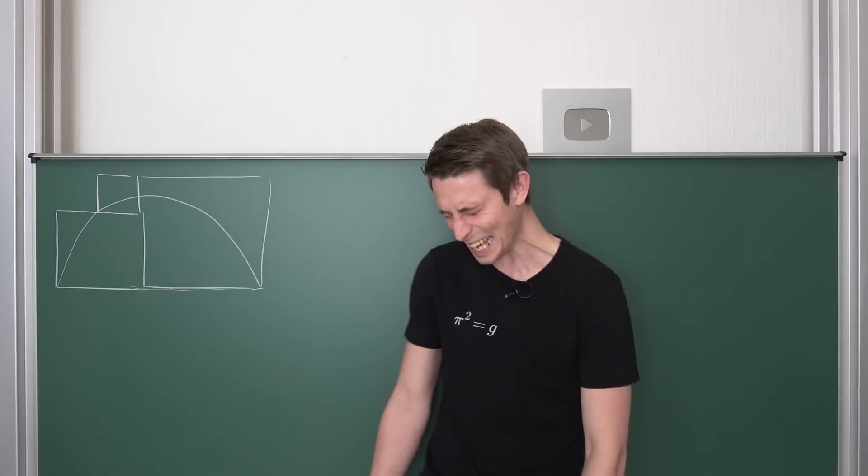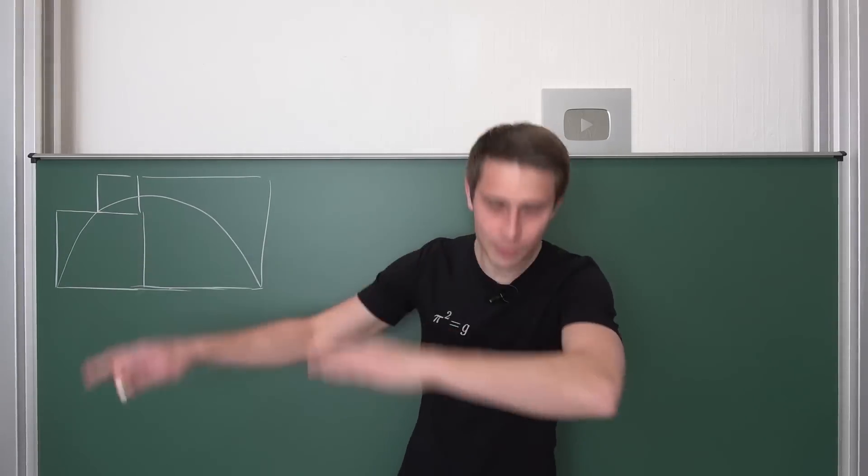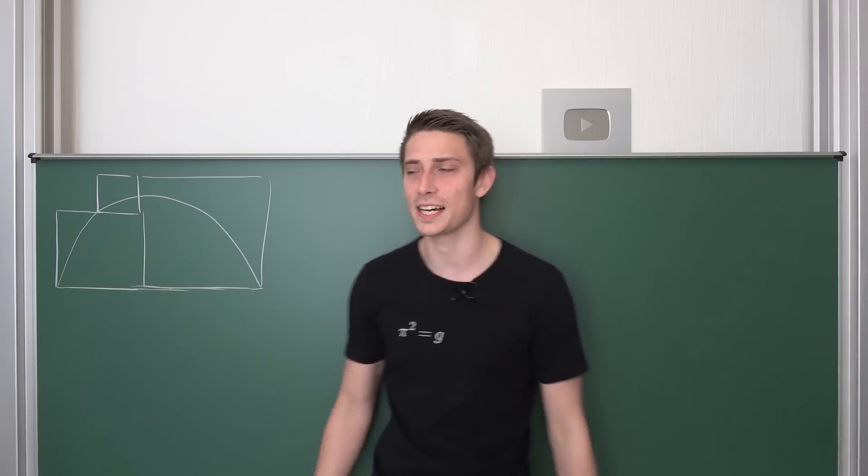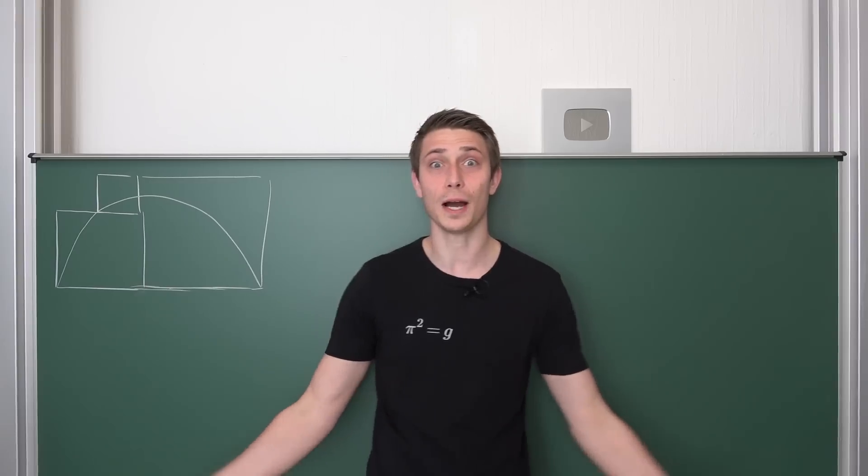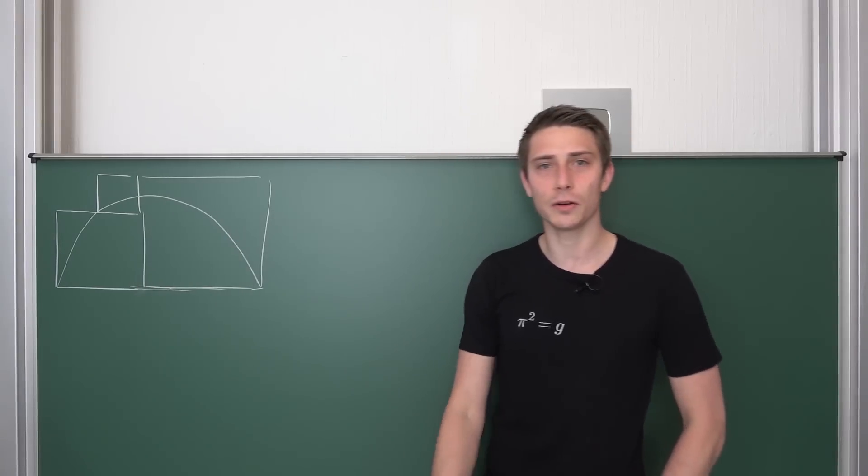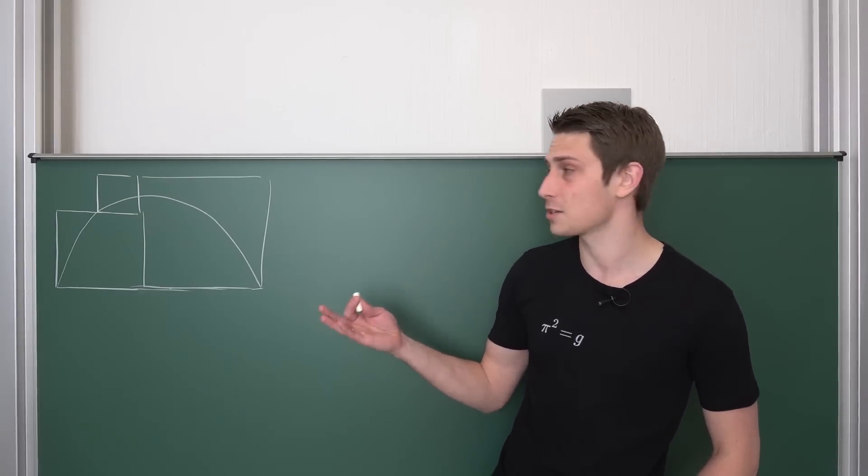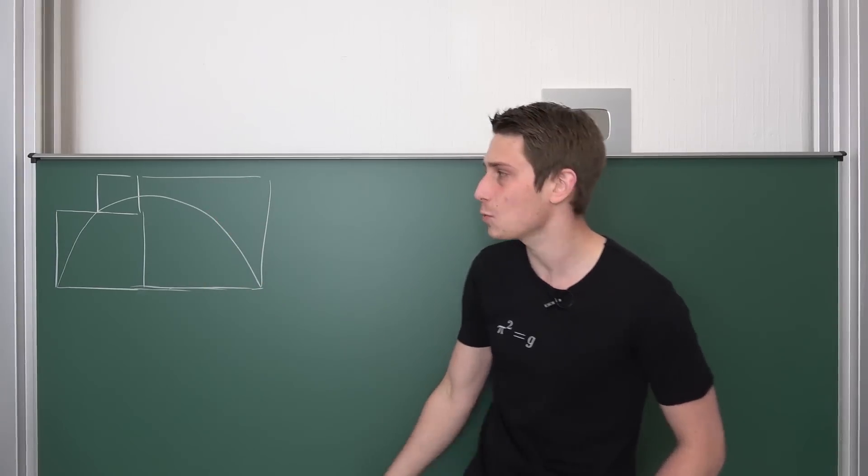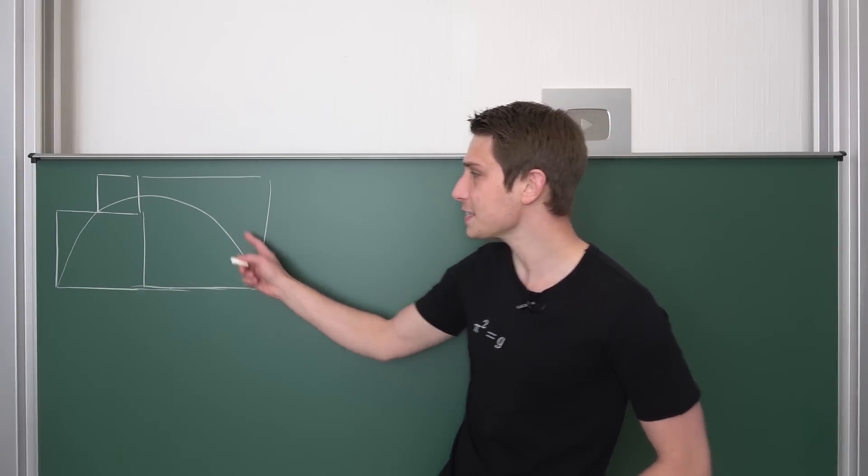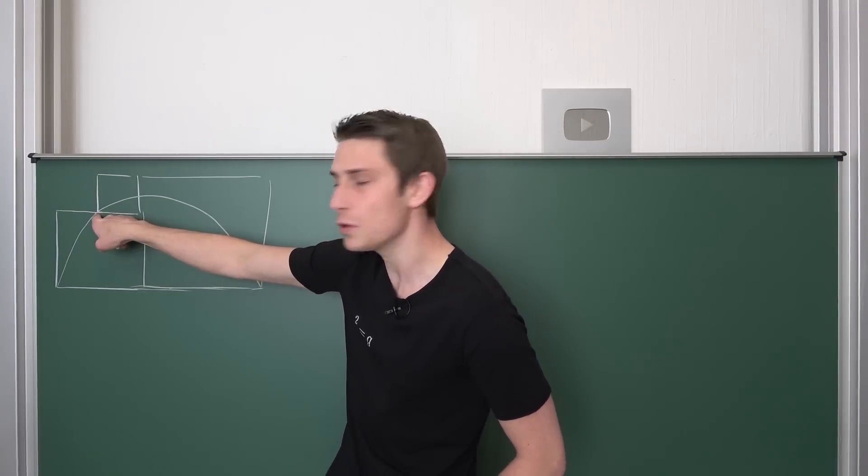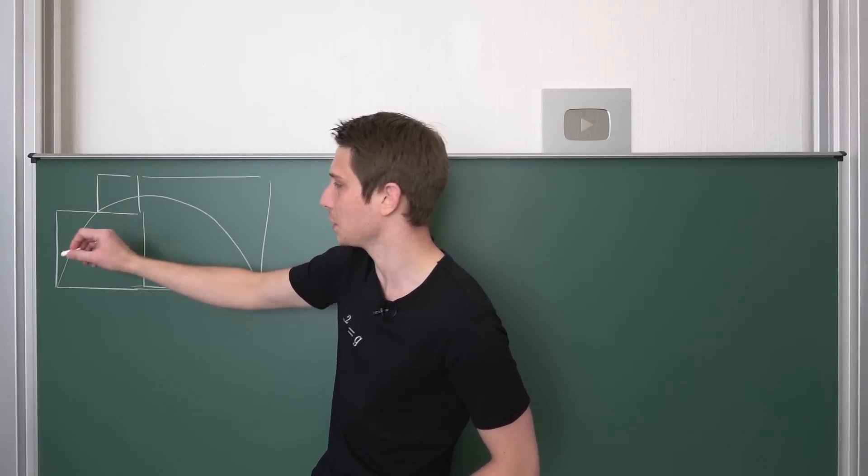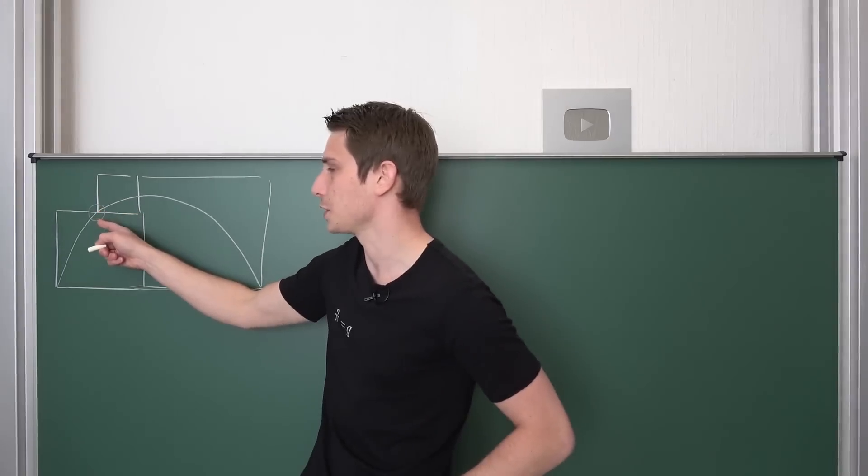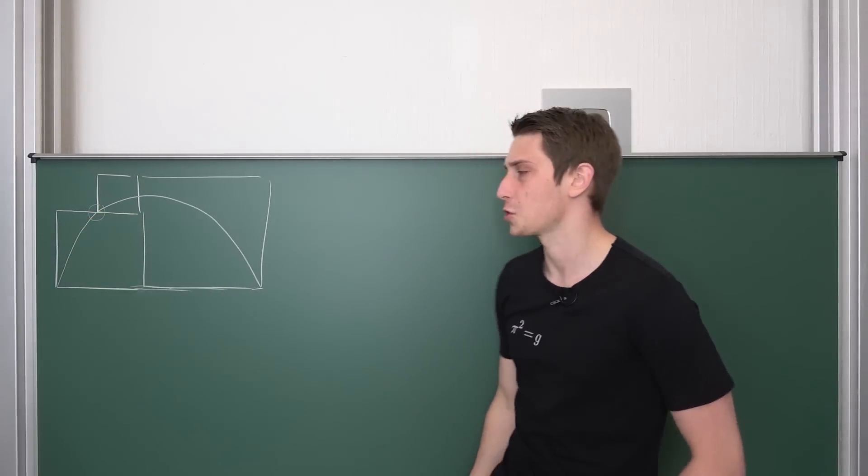Welcome back to another video. We are going to take a look at a geometry problem I found on some Facebook site. I haven't done any geometry in quite a while. We're going to find the total area of all those squares combined. This semicircle passes right through this point where our two squares lie on each other, and the corner is right on the edge of the bigger square.